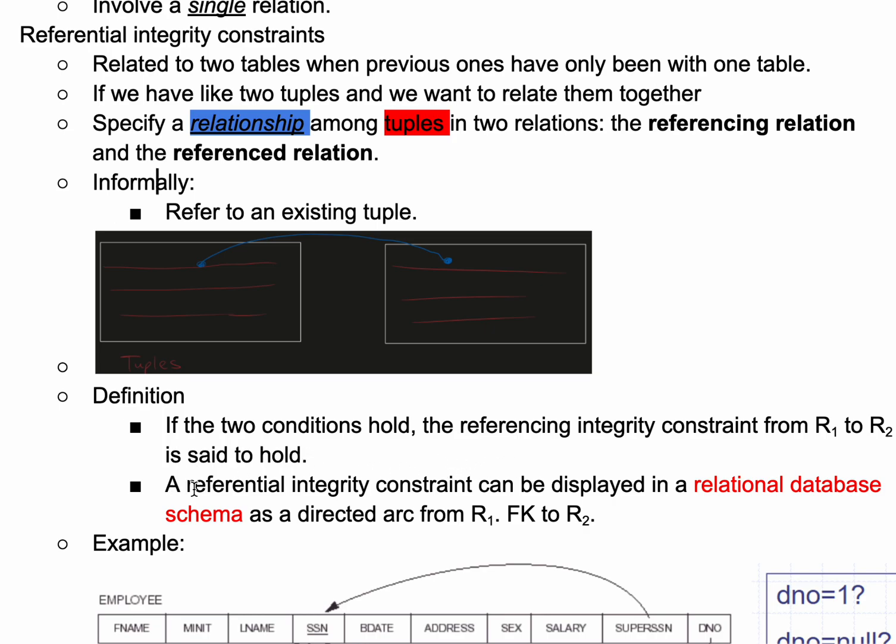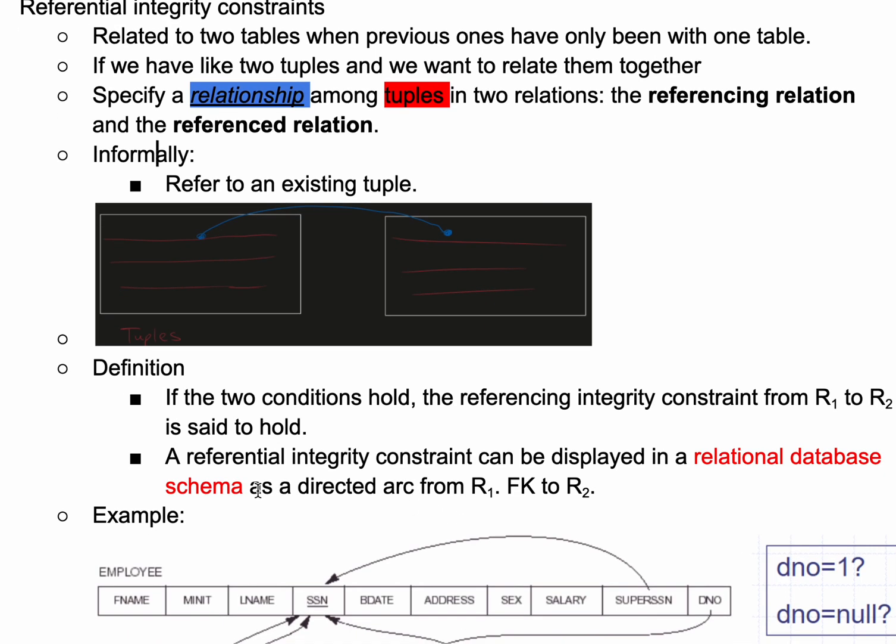A referential integrity constraint can be displayed in a relational database schema as a directed arc from R1, FK to R2.